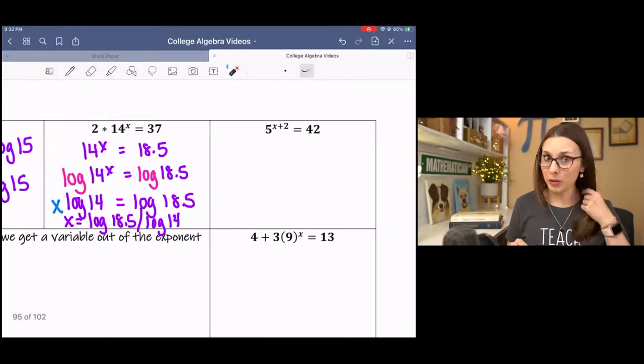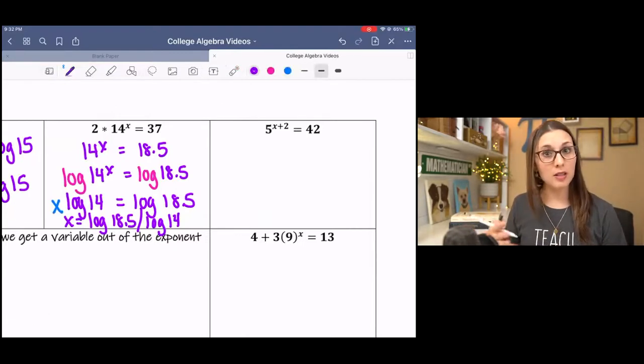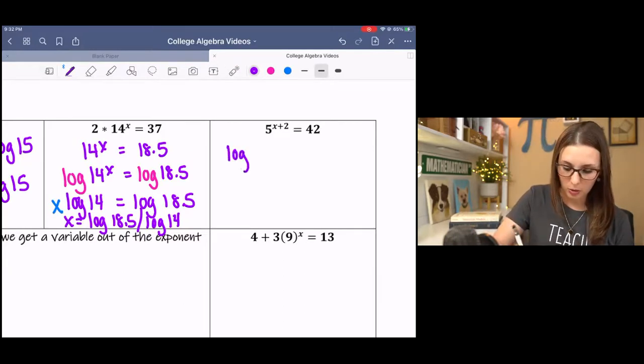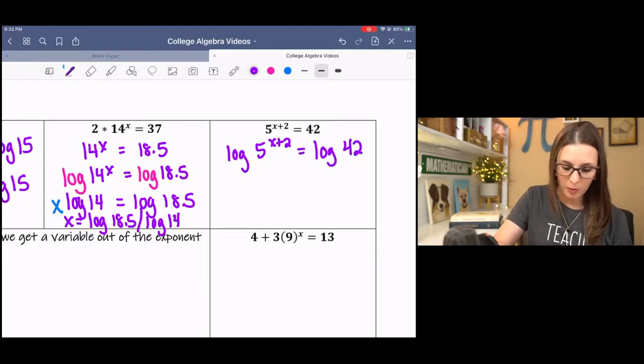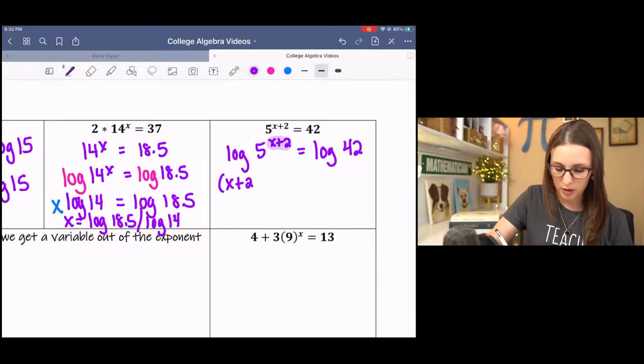And this last one, this is really cool. If we log both sides, notice that they have different bases. And since they have different bases, we're going to log both sides. So log 5 to the x plus 2 equals log 42. I'm going to use my properties of logs. I'm going to bring the exponent out front. When I bring it out front, I'm going to put it in parentheses. Because I need to bring the whole thing out front.